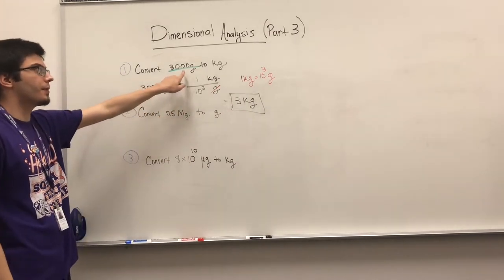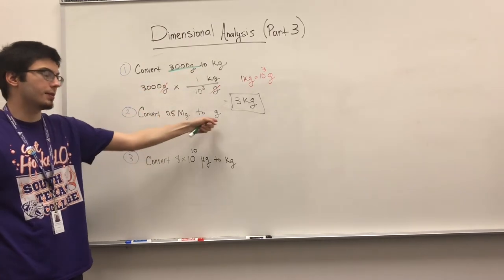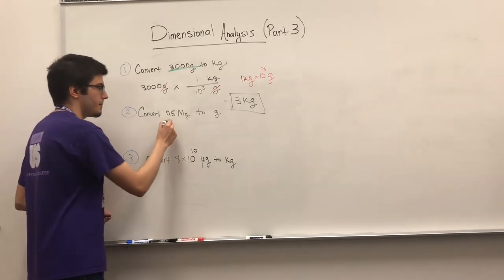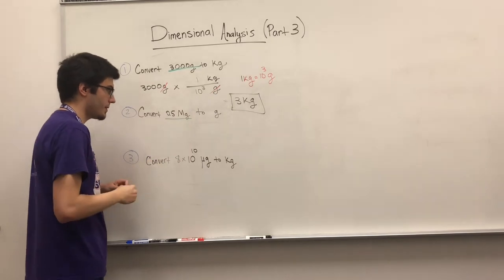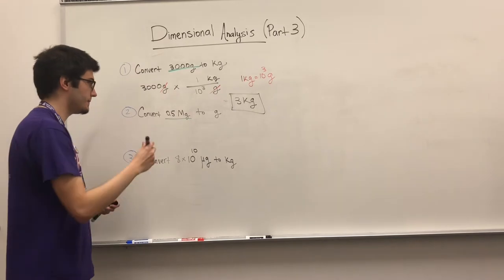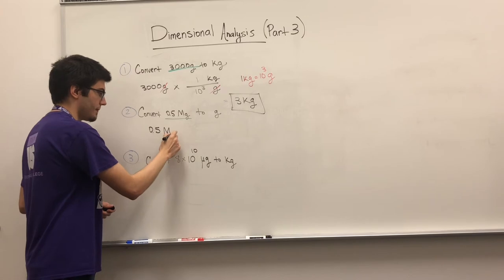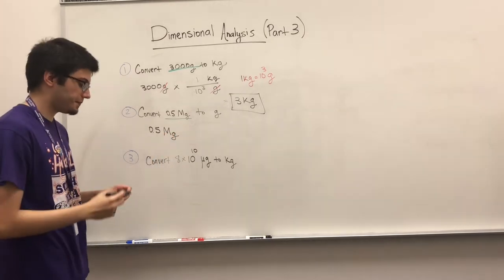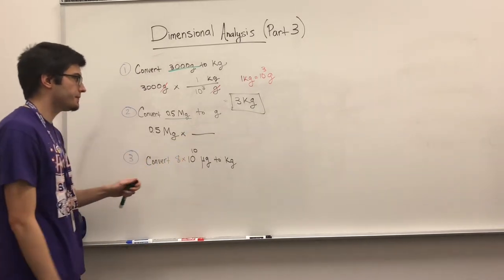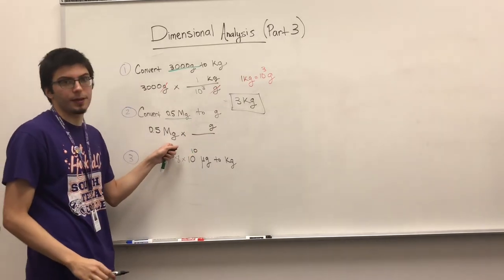Number two, we're going from big to the base. We're given 0.5 megagrams — capital M means megagrams. Write down what you're given: 0.5 megagrams. Multiply by the conversion factor — I want grams on top and I want to get rid of megagrams, so megagrams goes on the bottom.